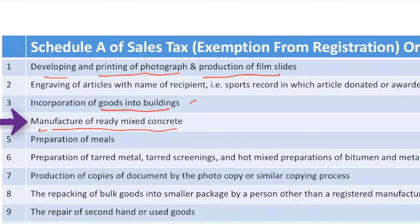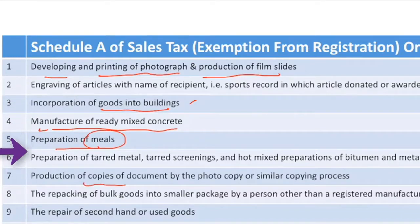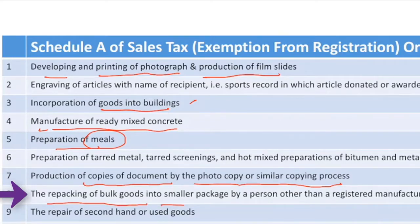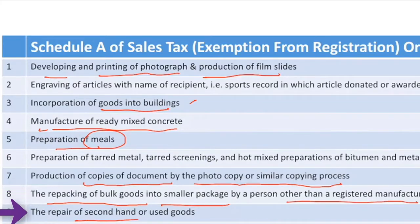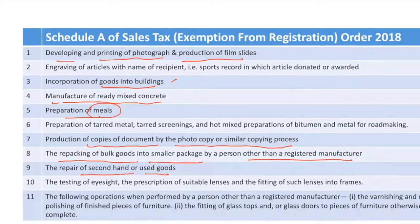Other exempted categories include manufacturers of ready-mixed concrete, preparation of meals, production of copies of documents by photocopy or similar copying process, printing houses, and repackaging of goods into smaller packages — other than by a registered manufacturer. Repair of second-hand or used goods is also not required to register.